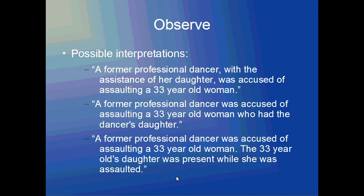For the third interpretation, I broke it up into two sentences: a former professional dancer was accused of assaulting a 33-year-old woman. The 33-year-old's daughter was present while she was assaulted. Here it's made clear that the daughter belongs to the 33-year-old woman, so 'her daughter' is not lexically ambiguous. And it's also made clear that the daughter accompanies the 33-year-old because it's stated that she's present.